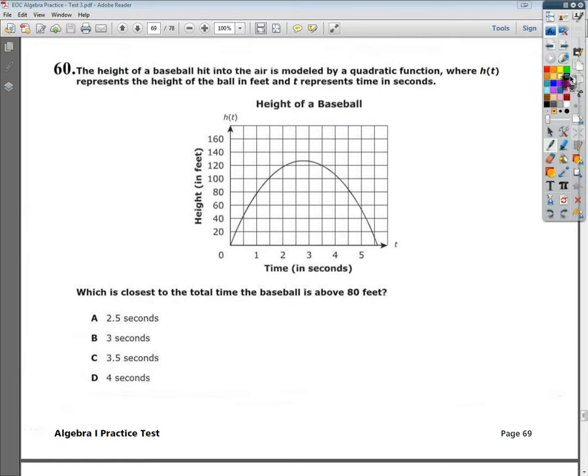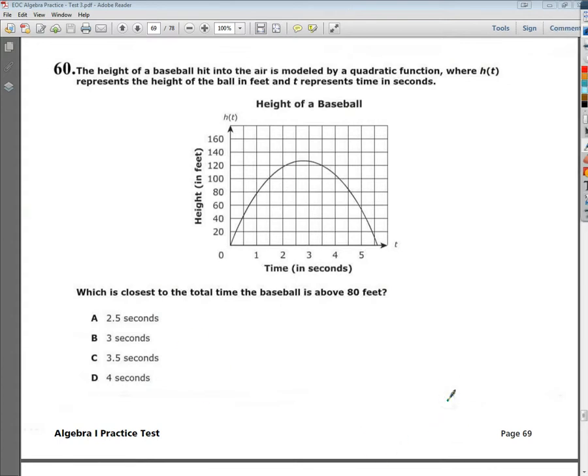The question says, the height of a baseball hit into the air is modeled by a quadratic function. That's why they have that kind of upside-down parabola-looking thing there. Where h(t) represents the height of the ball in feet, and t represents time in seconds. The question wants to know, what's the closest to the total time that the ball is above 80 feet?